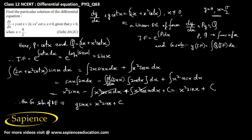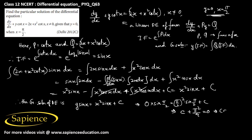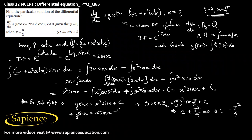To find the arbitrary constant, we use y = 0 when x = π/2. Substituting: 0·sin(π/2) = (π/2)²·sin(π/2) + C. Since sin(π/2) = 1, this gives 0 = π²/4 + C, so C = −π²/4. Therefore y·sin(x) = x²·sin(x) − π²/4.